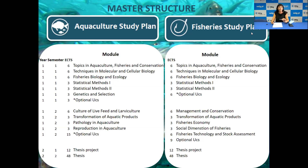In the fisheries strand, the second semester is quite different. It includes management and conservation, transformation of aquatic products, fisheries economy, social dimension of fisheries, fisheries technology and stock assessment, and nine credits of optional units. I will show you what these optional units look like.